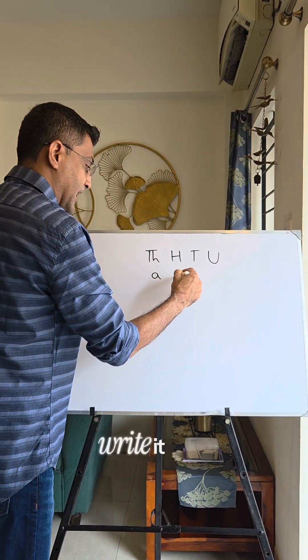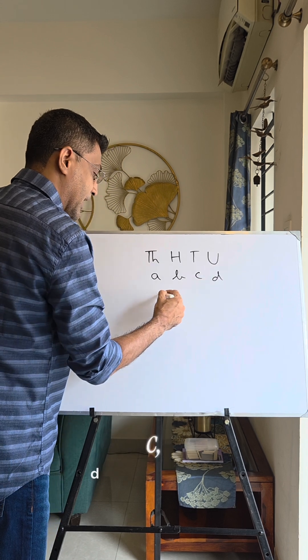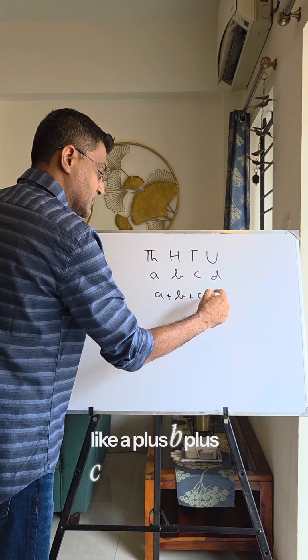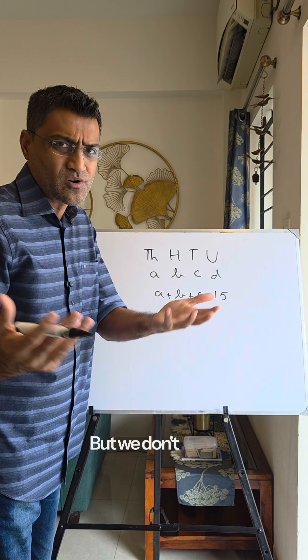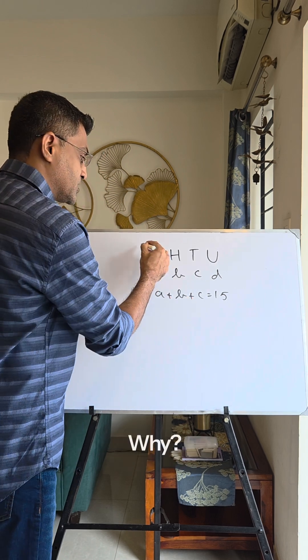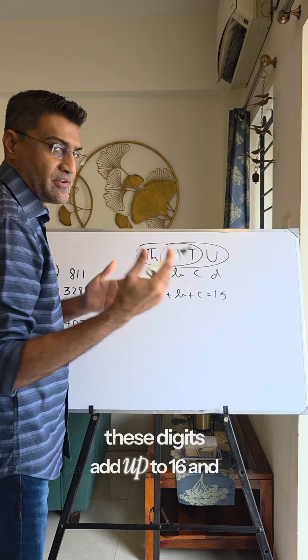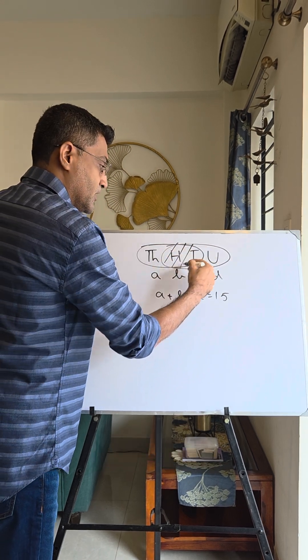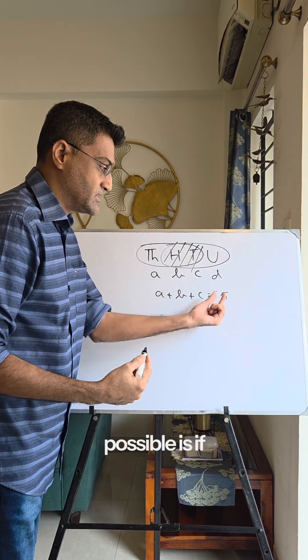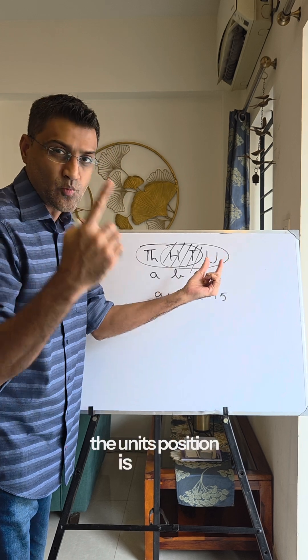A normal student would probably write it as: let the digits be a, b, c, d and create equations like a + b + c = 15, and so on. But we don't really need that. Why? Because they've told that the first three add up to 15 while the last three add up to 16. If you observe, the middle digits are common anyway. So the only way that would be possible is if the digit in the units position is one more than the digit in the thousands position.